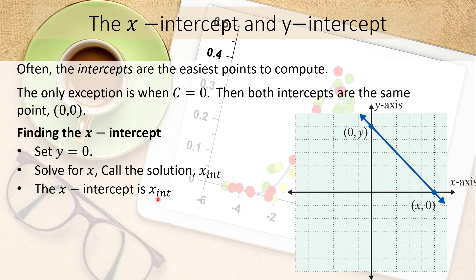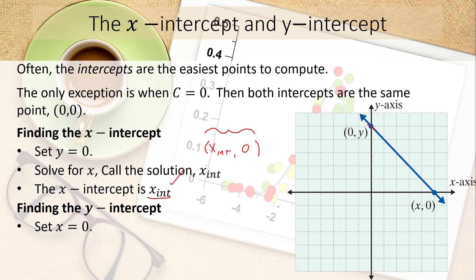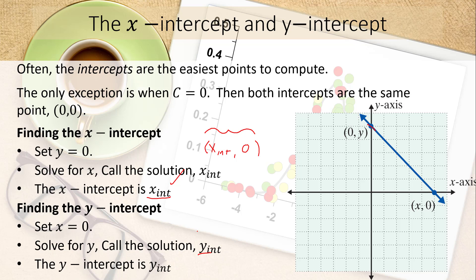This is slightly different from how we previously defined intercepts as ordered pairs. Here, the x-intercept is the value x-int (where the line crosses the x-axis), and the y-intercept is the value y-int (where the line crosses the y-axis, when x equals zero).